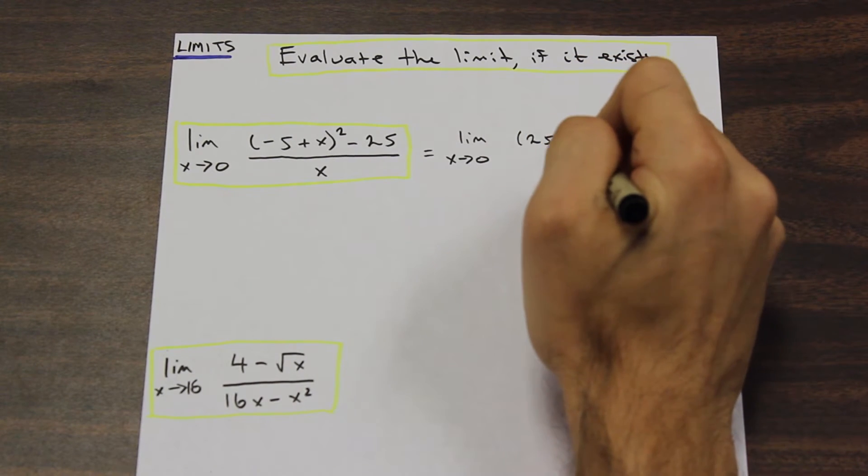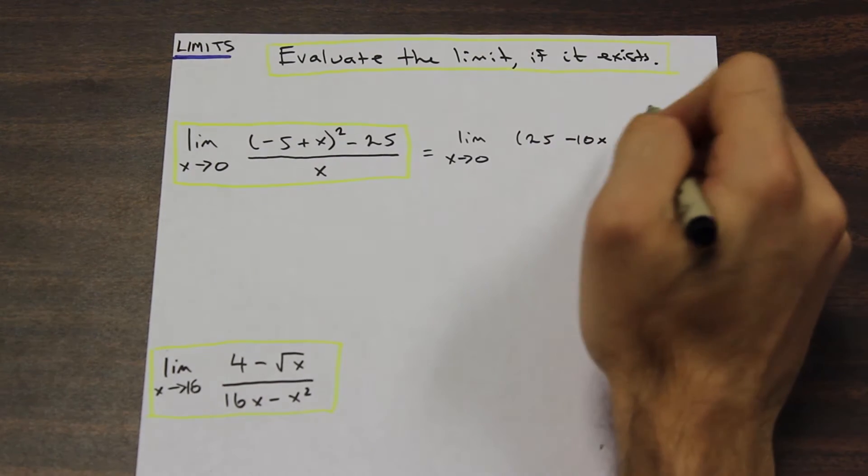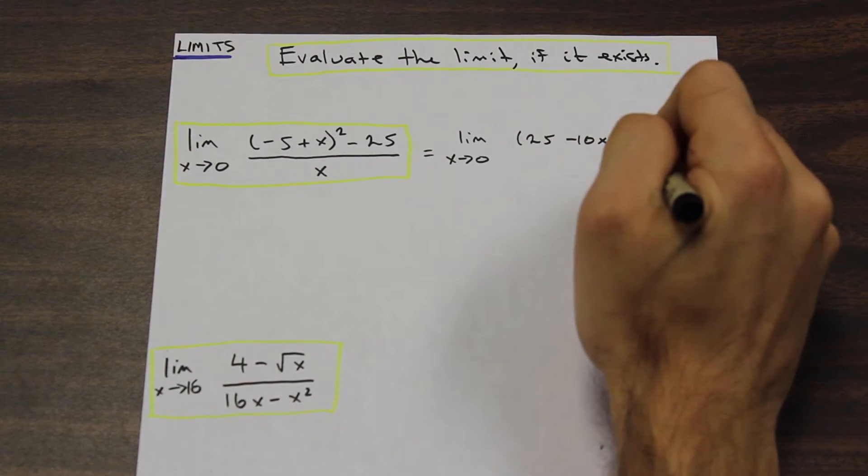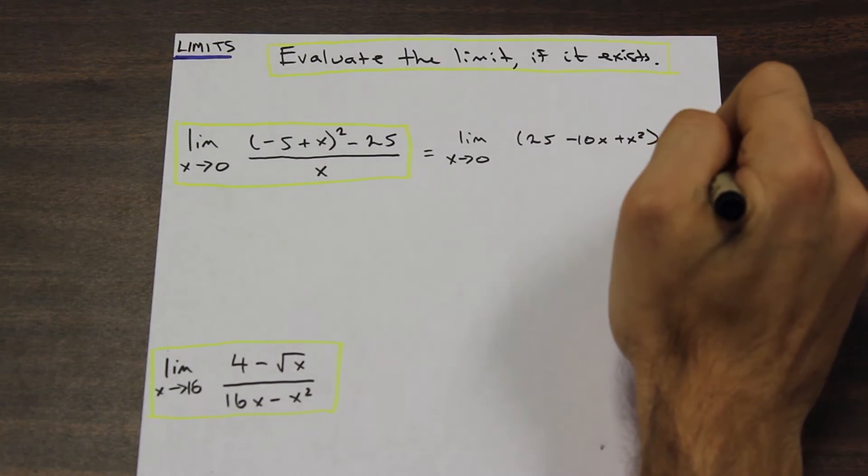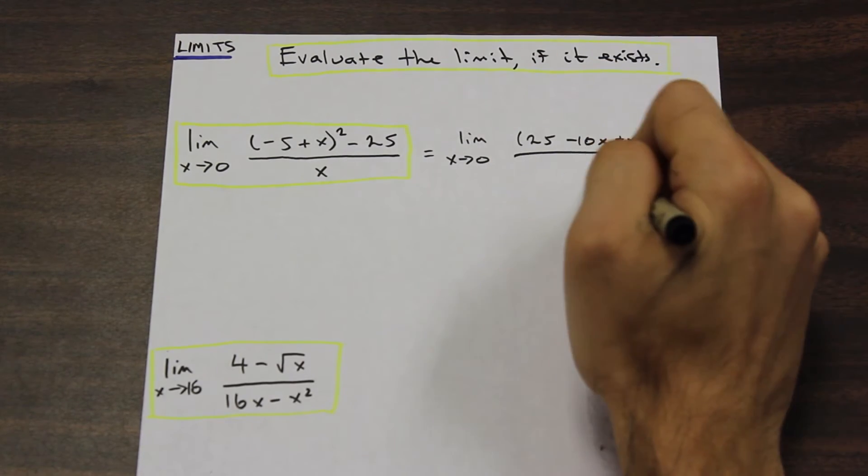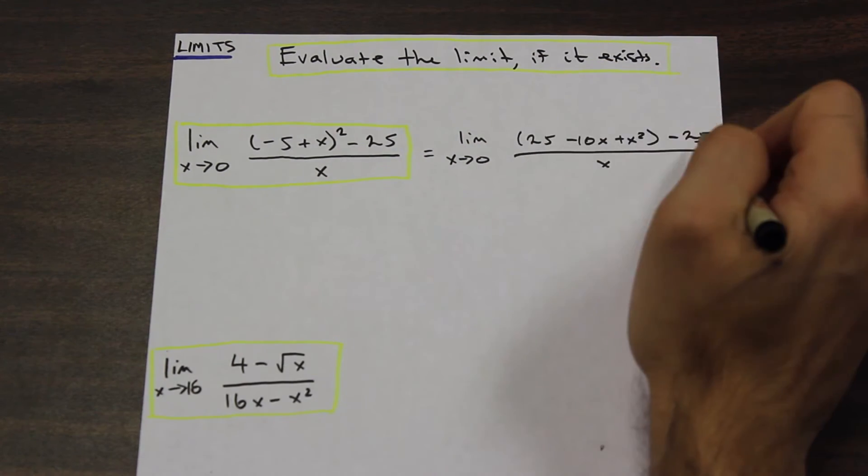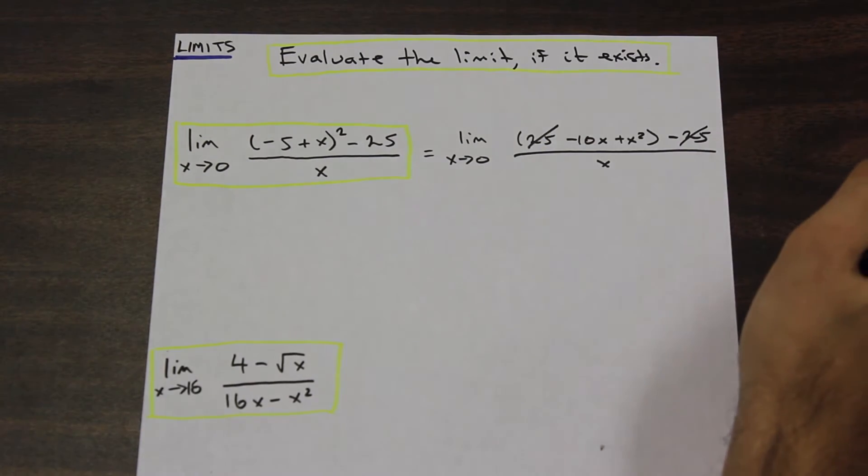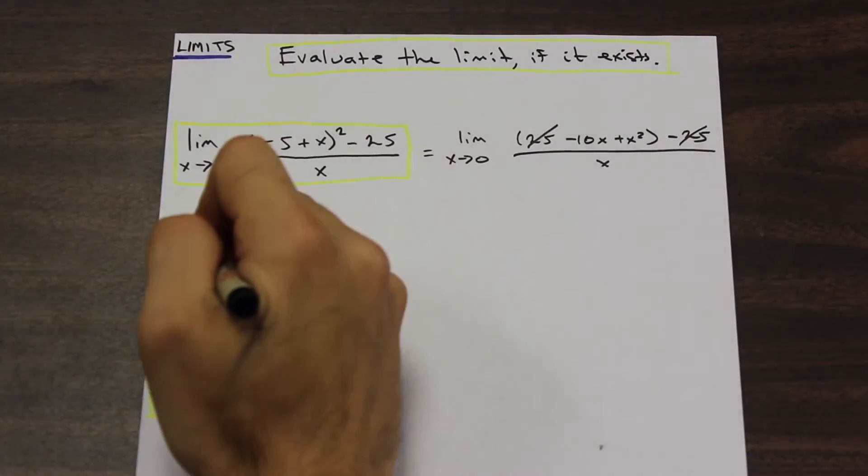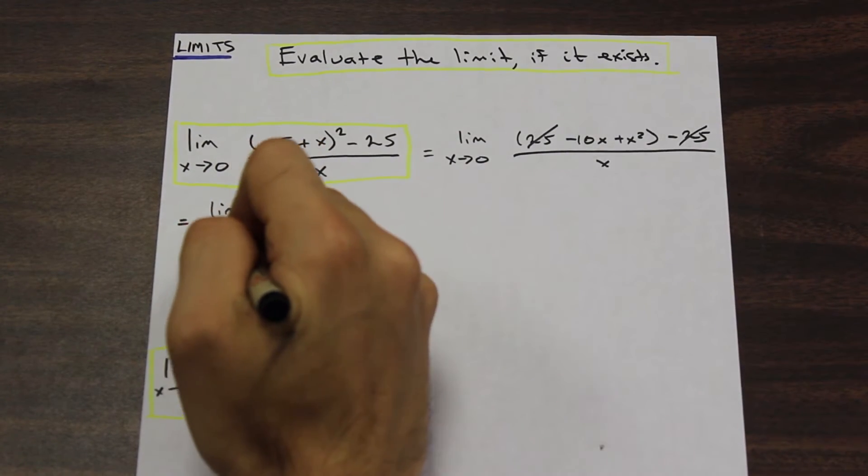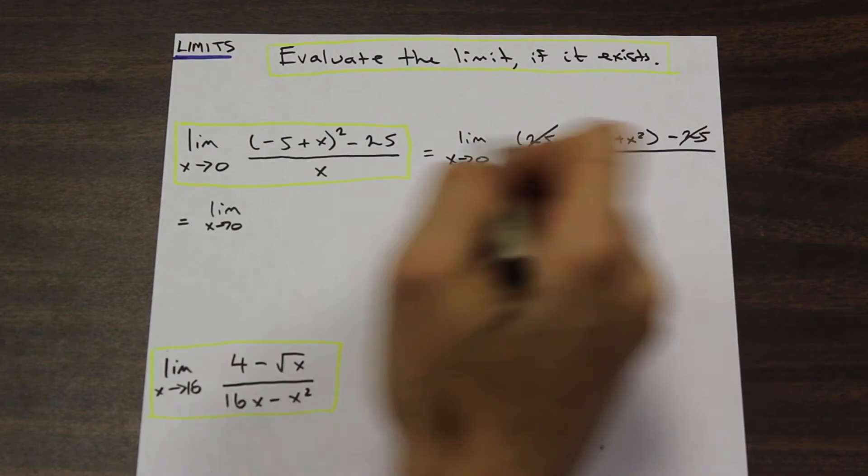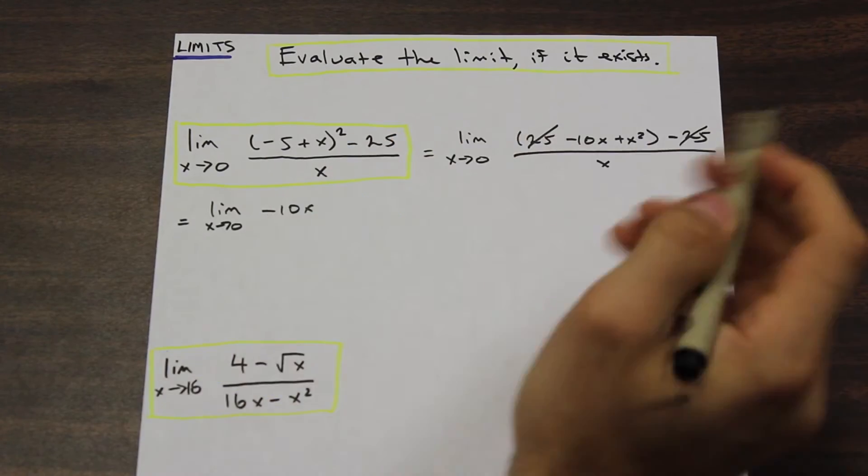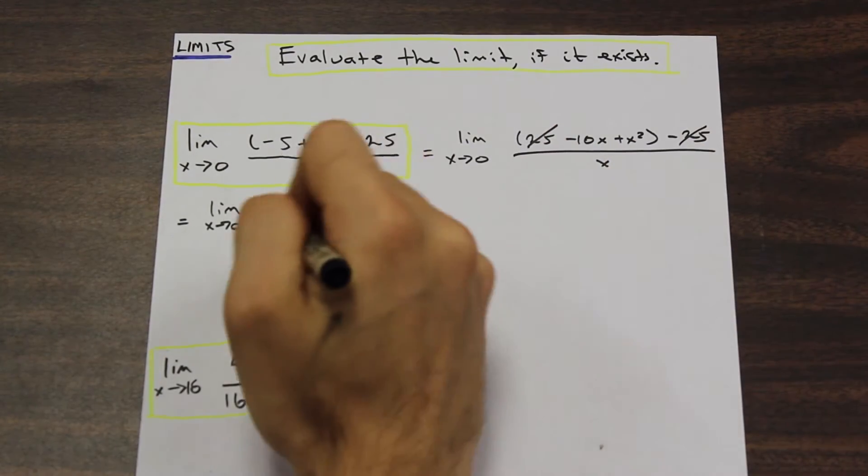So expanding this, we are left with 25 - 10x + x² - 25 over x. And as we can see here, we have 25 minus 25, that's going to cancel, it's going to be zero. And we can rewrite this as the limit as x approaches zero of -10x + x² over x.